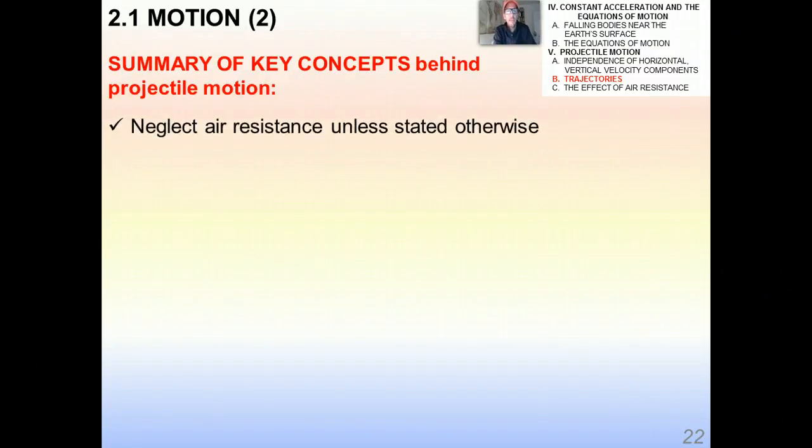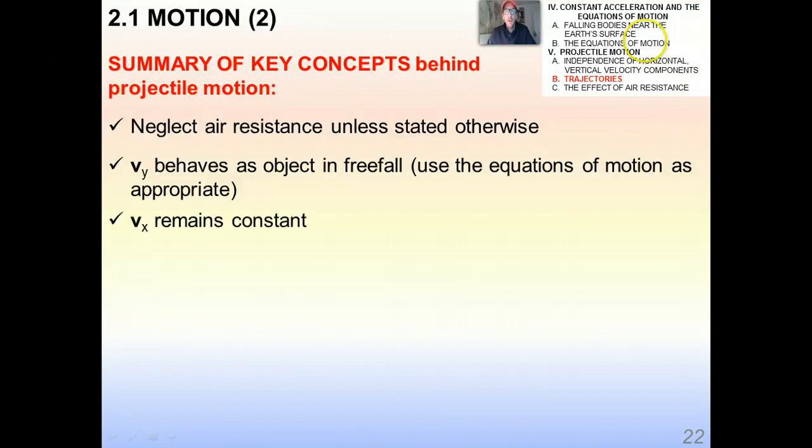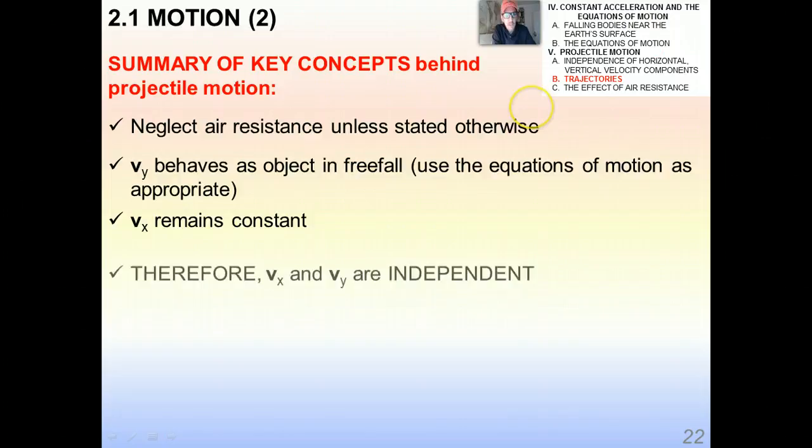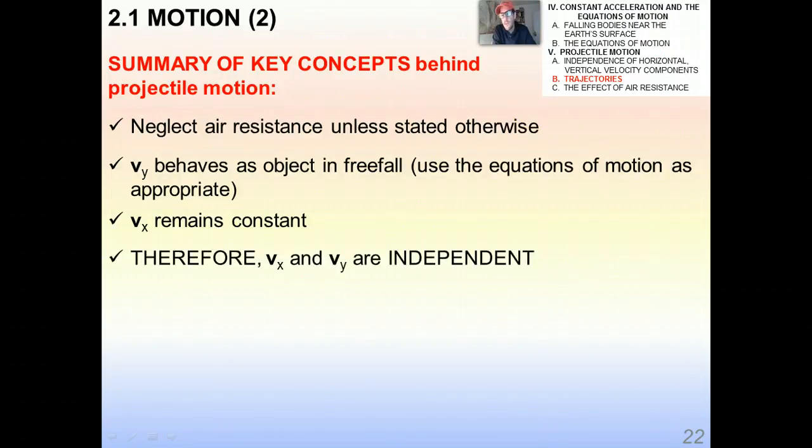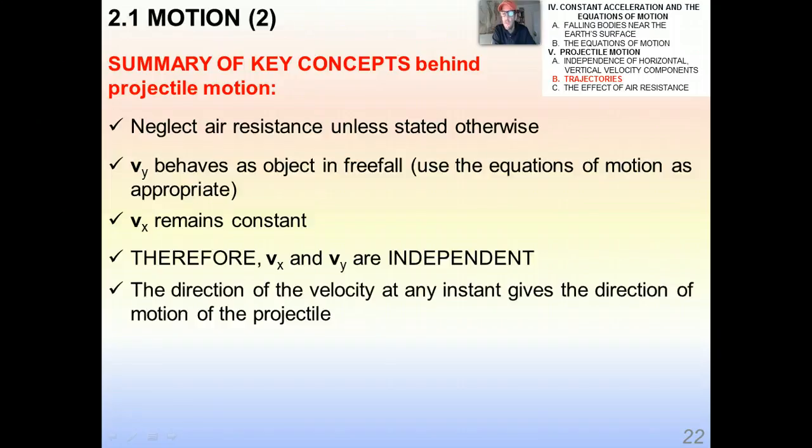So a summary of the key concepts, bringing it all together behind projectile motion. Number one, we always neglect air resistance unless stated otherwise. Two, the y component, the vertical component of the velocity, behaves as an object in free fall, and we use the equations of motion as appropriate in the vertical. The horizontal velocity, v_x, remains constant. Therefore, the horizontal and vertical velocities are completely independent from each other.